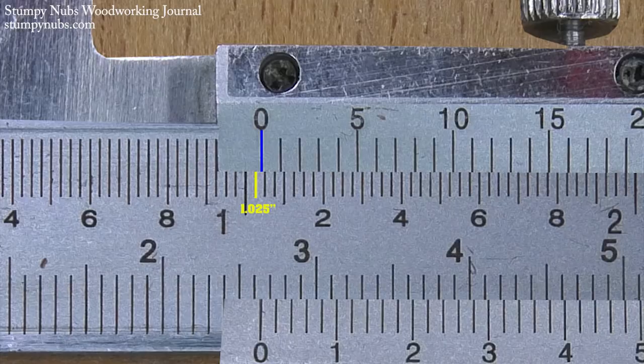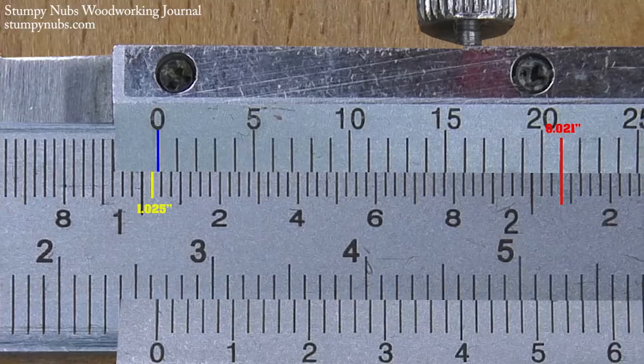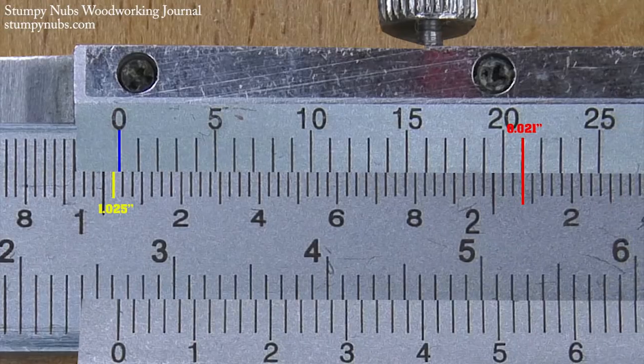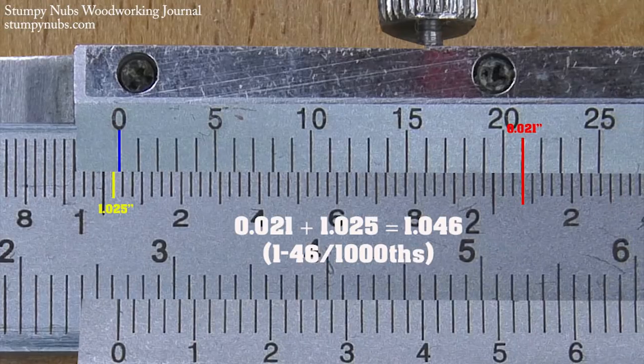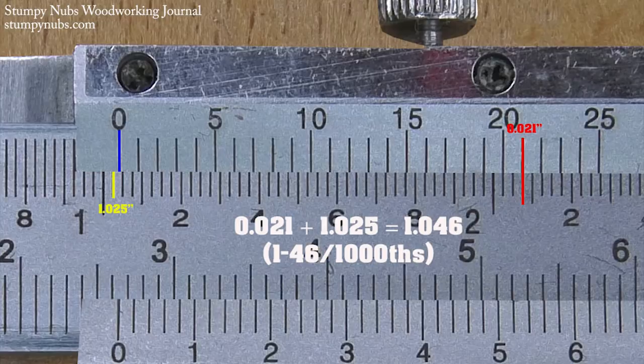Here the zero cursor is just past the one point oh two five point. Looking at the Vernier scale, we see that the nearest mark that aligns with a point on the main scale is twenty-one. Since those are thousandths, we add point oh two one to our one point oh two five and we get one point oh four six or one and forty-six thousandths.